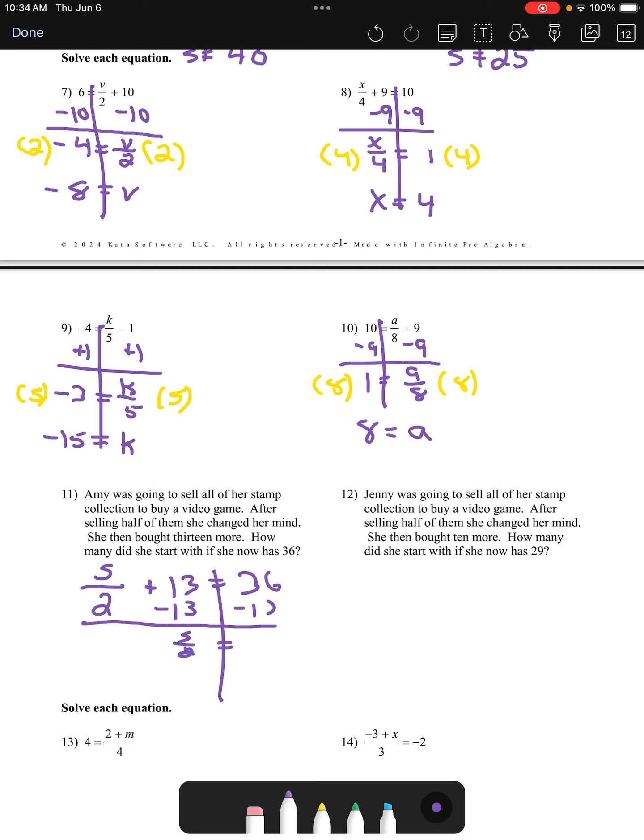We'll subtract 13 from each side to get s over 2 is equal to 23. Then we'll multiply both sides by 2 to get s is equal to 46.